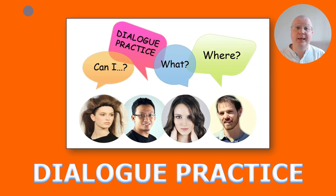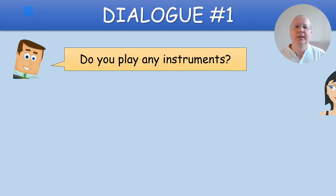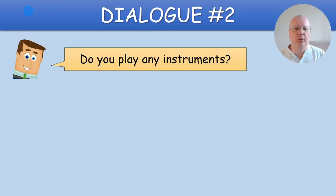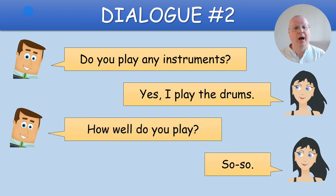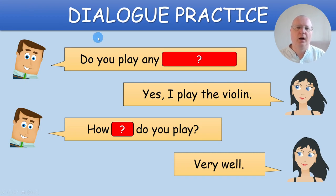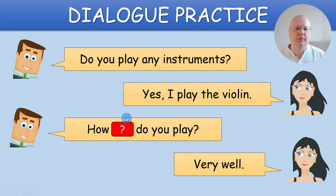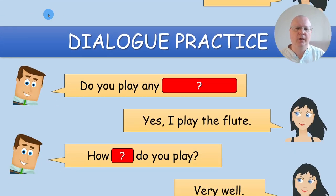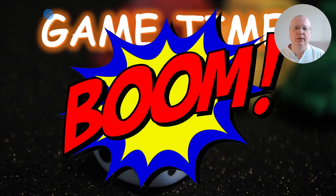Now we get to dialogue practice. You display two dialogues on the board. One: Do you play any instruments? Yes, I play the piano. How well do you play? Very well. And the second: Do you play any instruments? Yes, I play the drums. How well do you play? So-so. You can practice with the whole class. There's a rectangle you can click to remove it and help students if they forget the words. We practice the dialogue with the musical instruments and get to the final game.